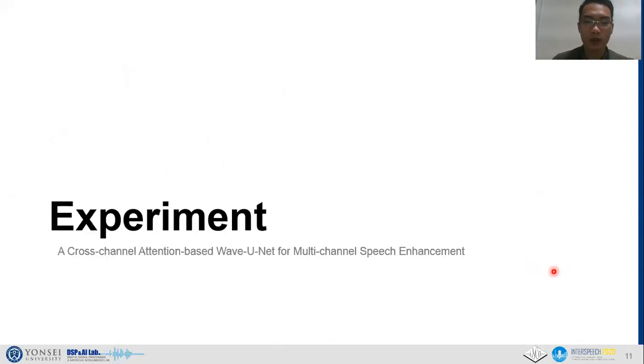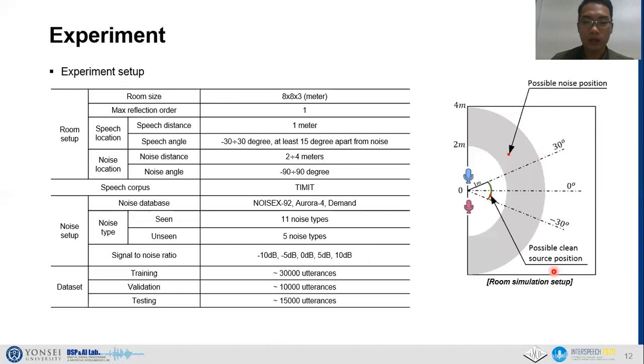Next, let's go to the experiment part. This slide shows the experiment setup used in this paper. We use image source method for simulating multi-channel data from single-channel wave files. The room simulation setup is summarized in this paper and the area of possible noise position is illustrated as a gray region on the figure here, while the green curve here illustrates the possible position of the clean source.